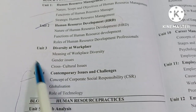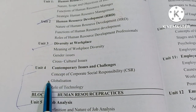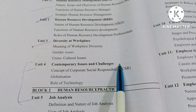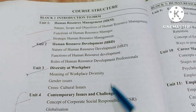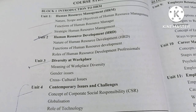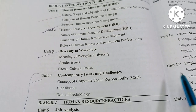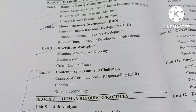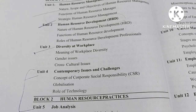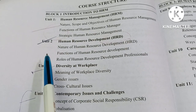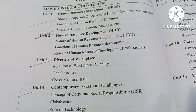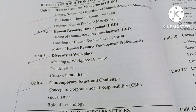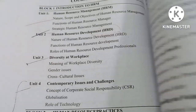So now we are doing unit 4 and unit 5. We will start from unit 4, which covers Contemporary Issues and Challenges. After unit 4, the first block will be completed. In this book, there are 3 blocks, and there are 4 units in each block. So now we are doing the first block: Contemporary Issues and Challenges. Let's start the topic.